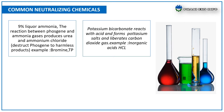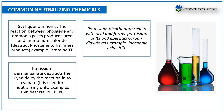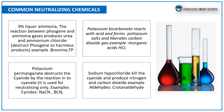Potassium bicarbonate is used for inorganic acids like HCl. Potassium permanganate destroys cyanide by reaction, converting it into cyanate; it is used for neutralizing cyanates and NSen. Sodium hypochlorite kills cyanide and produces nitrogen and carbon dioxide; it is used for aldehydes like crotonaldehyde.